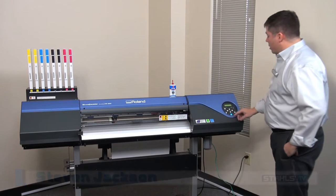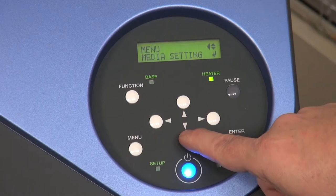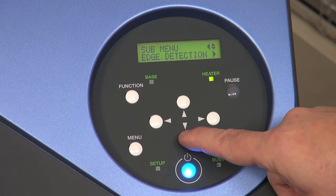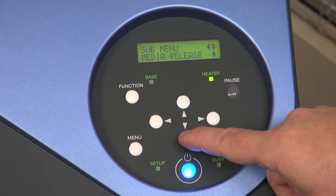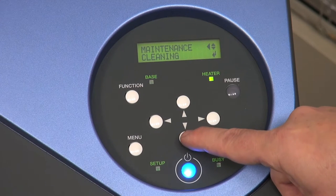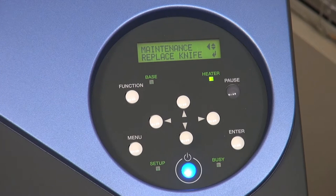To do this we'll go into the menu, down to submenu, over and then down to maintenance, over once again and then down until replace knife shows.